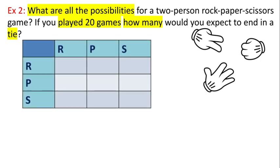So here's my table. Each of these boxes represents something that could happen in the game. This first box means I pick rock and my opponent picks rock. This one would mean I pick paper and my opponent picks rock. And then this one means I pick scissors and my opponent picks rock.